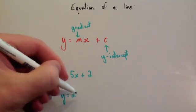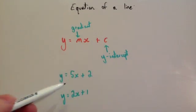The graph y equals 2x plus 1 would have a gradient of 2, and it would cross the y-axis at 1.